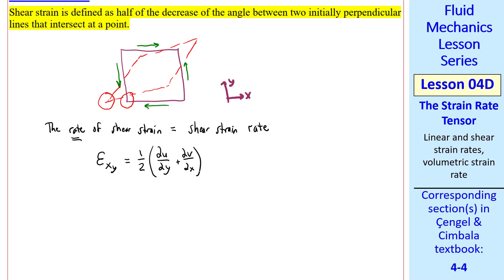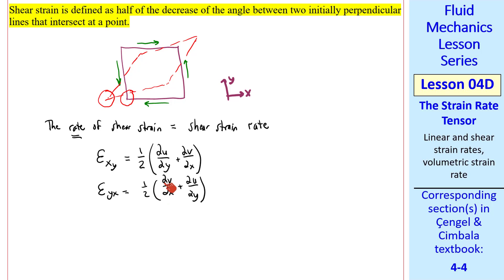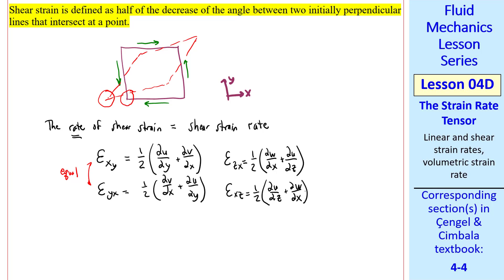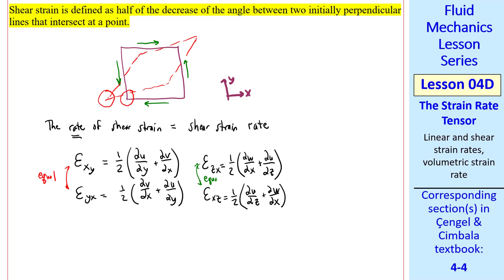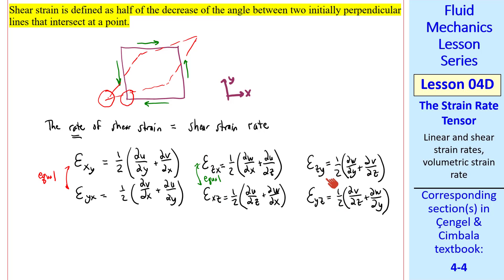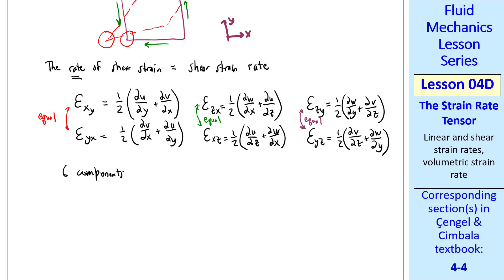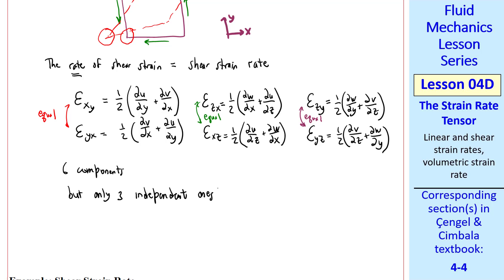ε_xy equals one-half times (∂u/∂y + ∂v/∂x). ε_yx equals one-half times (∂v/∂x + ∂u/∂y), which by the commutative property of addition is the same as ε_xy. Similarly, ε_zx equals one-half times (∂w/∂x + ∂u/∂z), and ε_xz is the same. The notation indicates the two initially perpendicular lines are in the x and z directions. Finally, ε_yz and ε_zy are equal to each other. So we have six components of shear strain rate, but only three are independent since these pairs are equal.